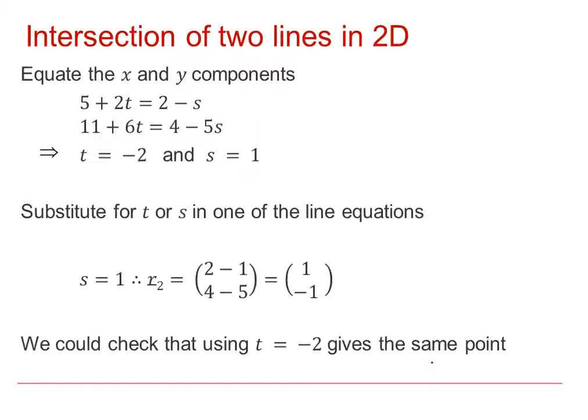So we can see the work in there, and it's very important to appreciate that the parameters can take on different values, so it's important we use two different parameters. And we can substitute for T or S into the appropriate straight line, so here we're substituting S equals 1 into the correct line, which was R2, and we get (1, -1). We could check this answer by substituting T equals minus 2 into the line R1 to make sure we get the same given point.